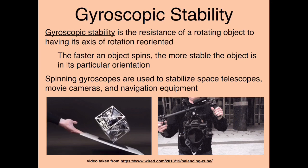Gyroscopic stability is the resistance of a rotating object to having its axis of rotation reoriented — the faster it spins, the more stable it is. This is used in all kinds of technology: spinning gyroscopes stabilize the Hubble Space Telescope as it captures images, movie cameras are gyroscopically stabilized, and navigation equipment on ships uses gyroscopes to maintain stability.